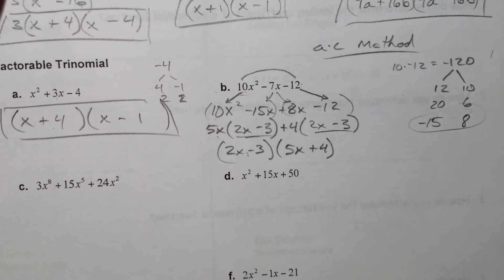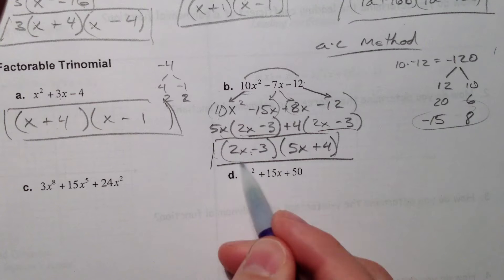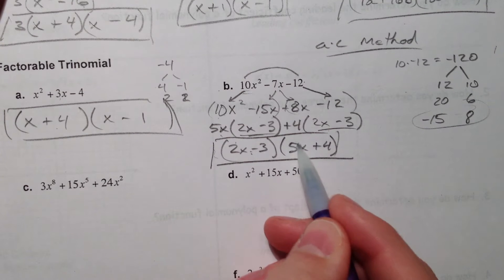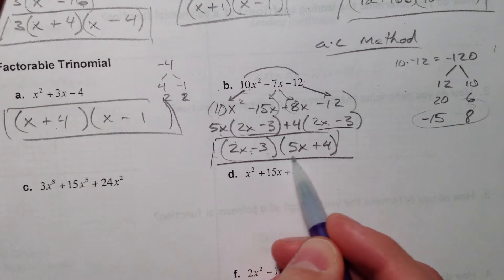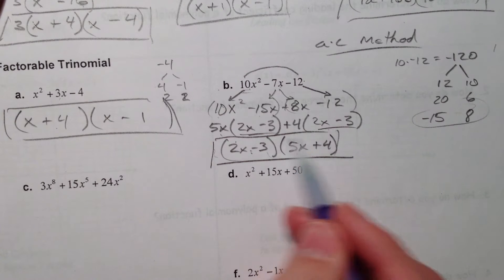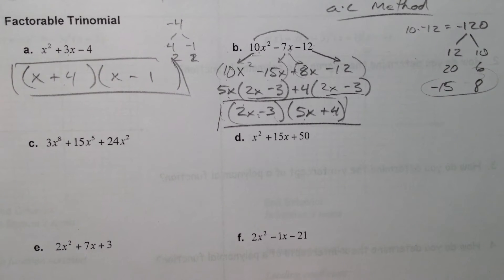So 2x - 3 is what they have in common. You can pull those out of both of them. And that leaves 5x + 4. Please, please, please remember that you can multiply all of these back out again. 2x times 5x is 10x². Plus 8x minus 15x and minus 12.